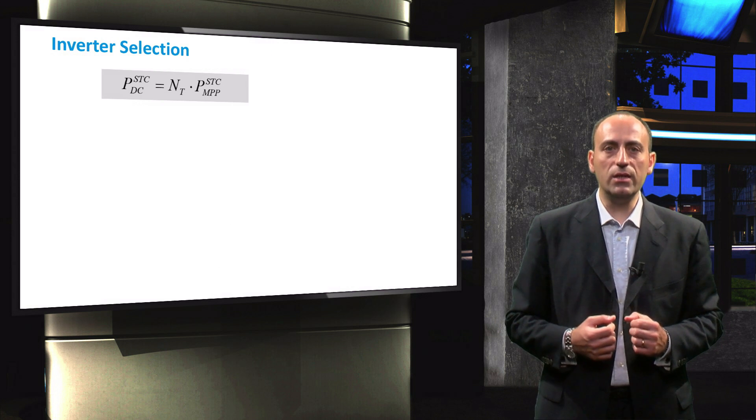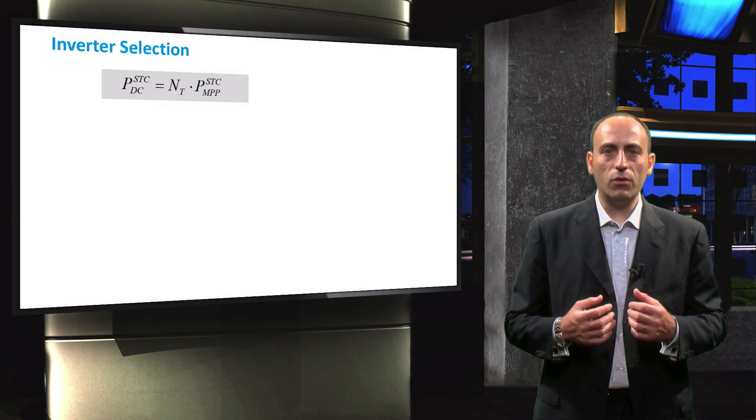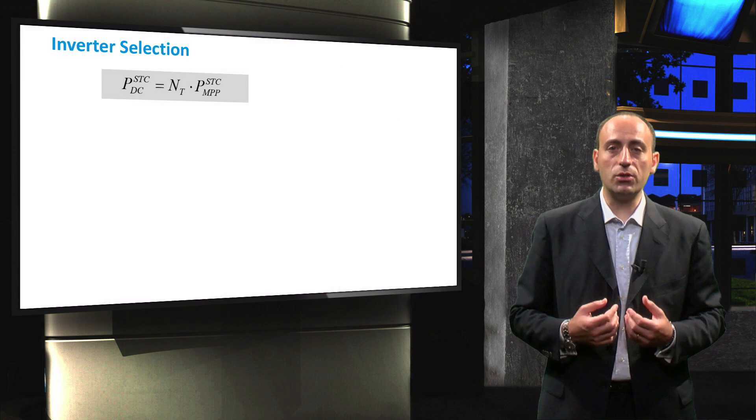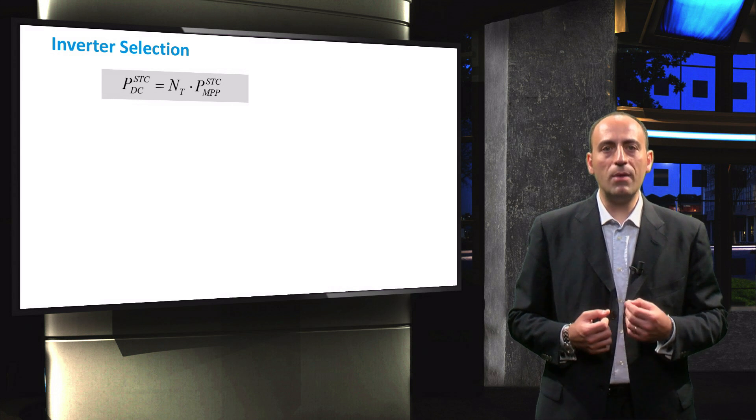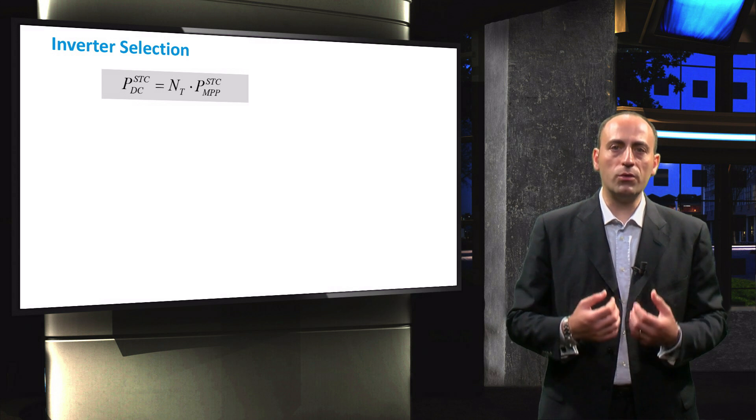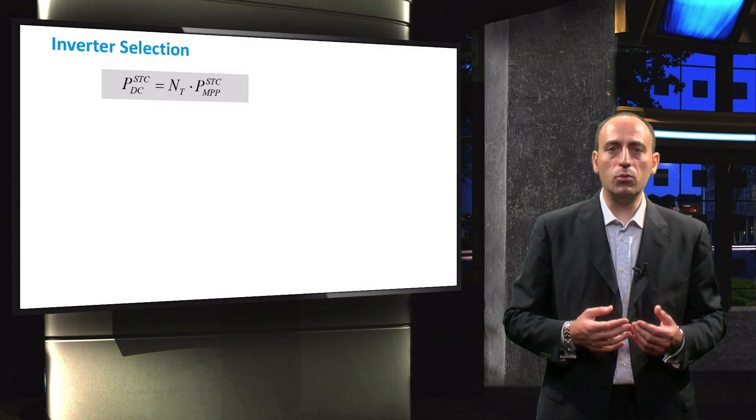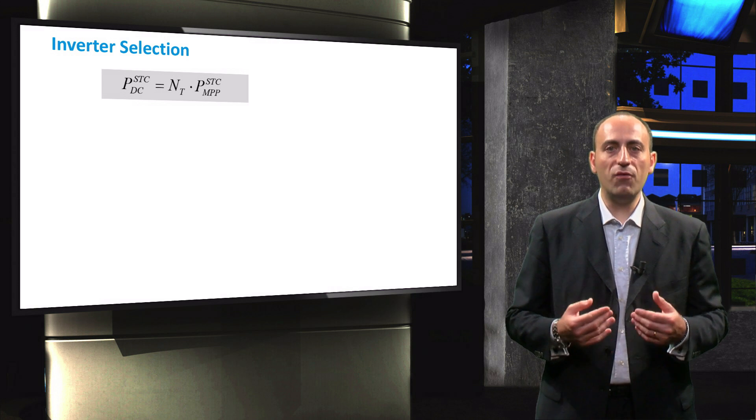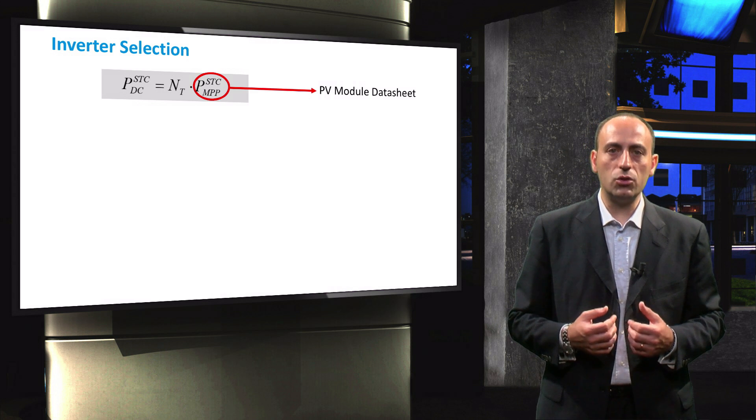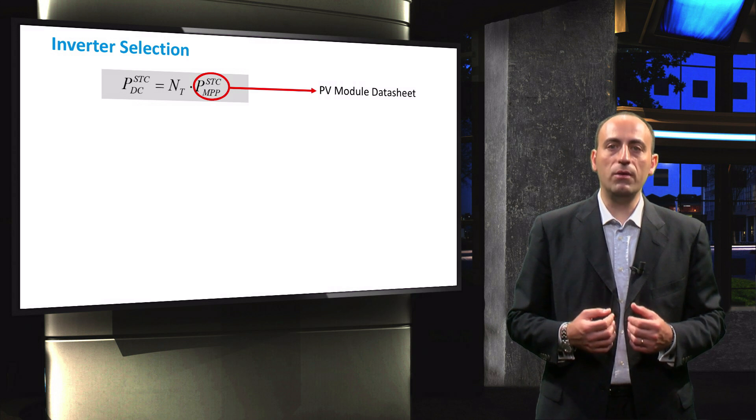For calculating the AC yield, a suitable inverter must be chosen. For the inverter selection, the PV modules are assumed to be operational under the standard test conditions, delivering maximum DC power output. This output is a product of the total number of PV modules and the nominal power output of a single module, which can be found in the module datasheet.